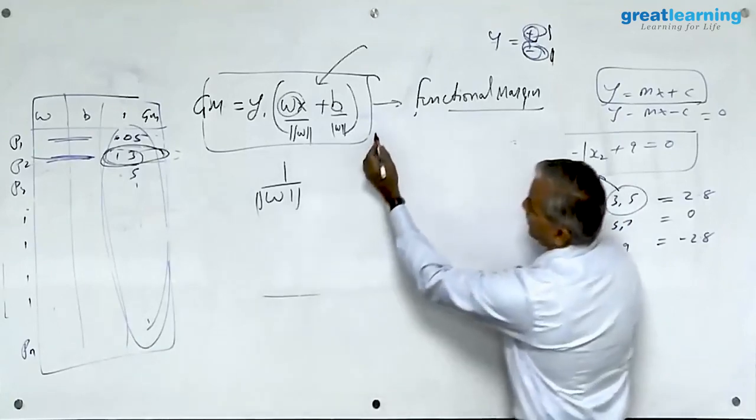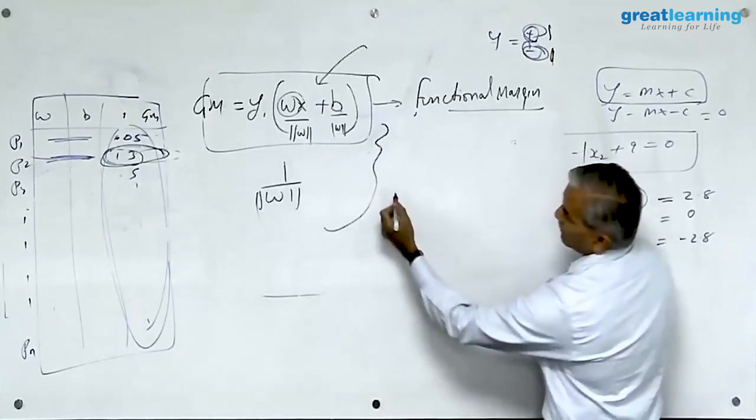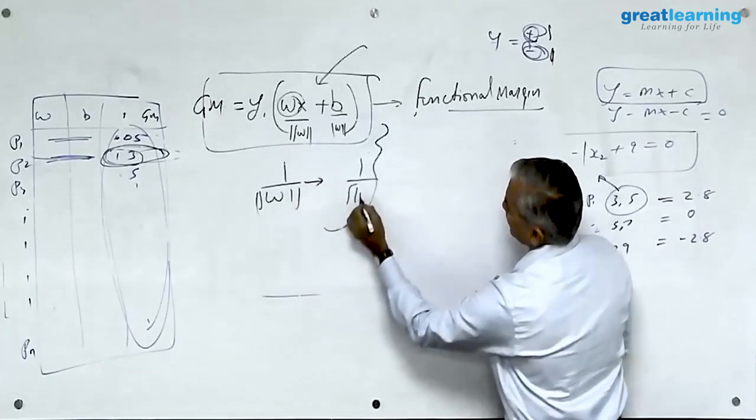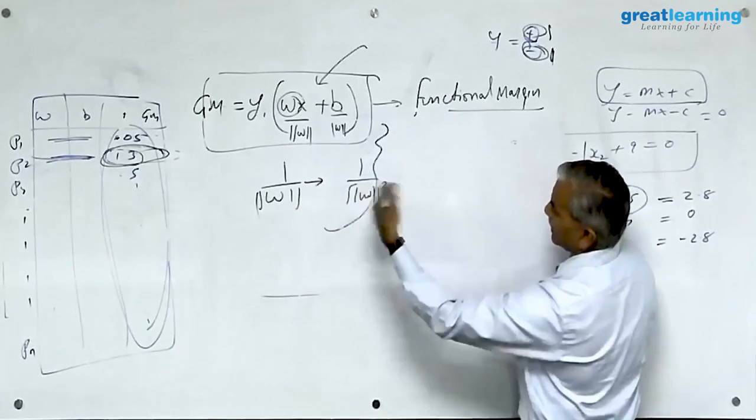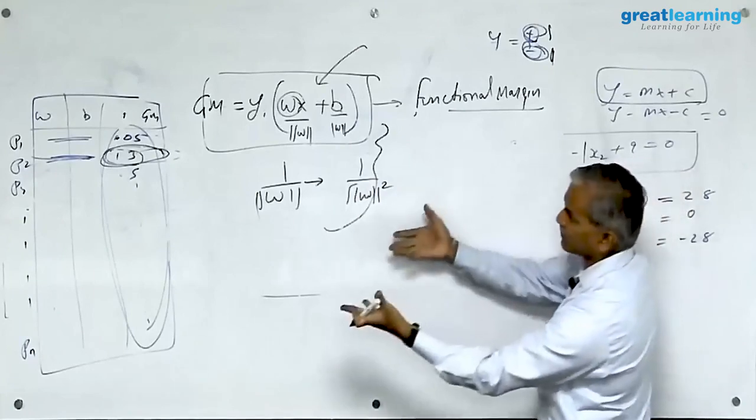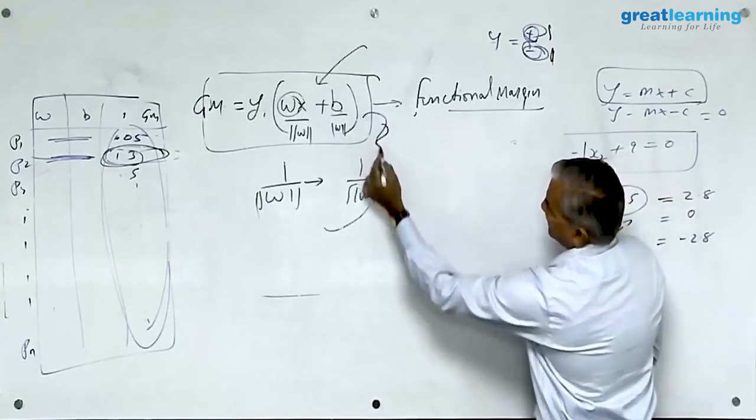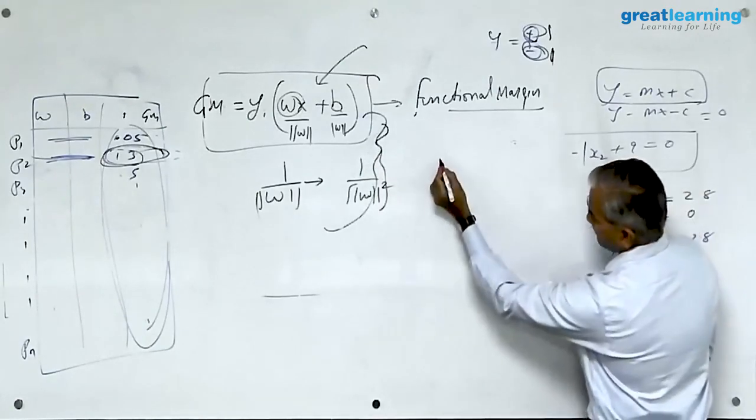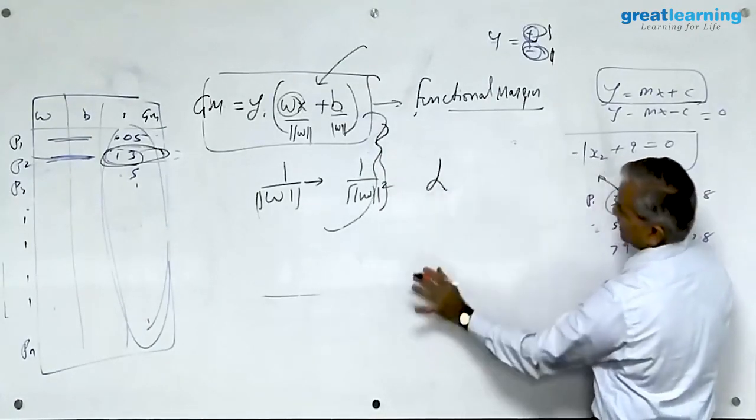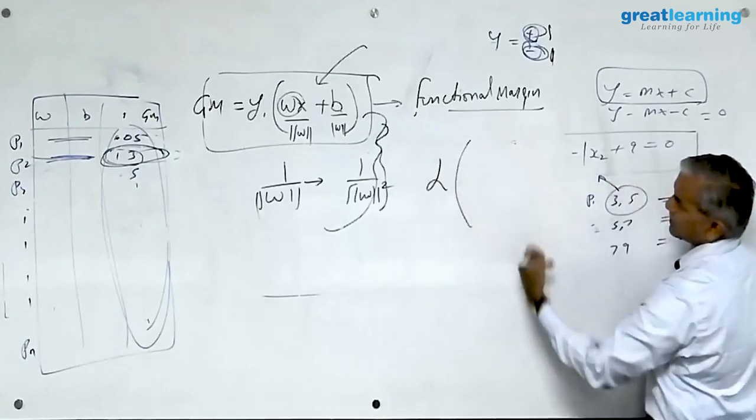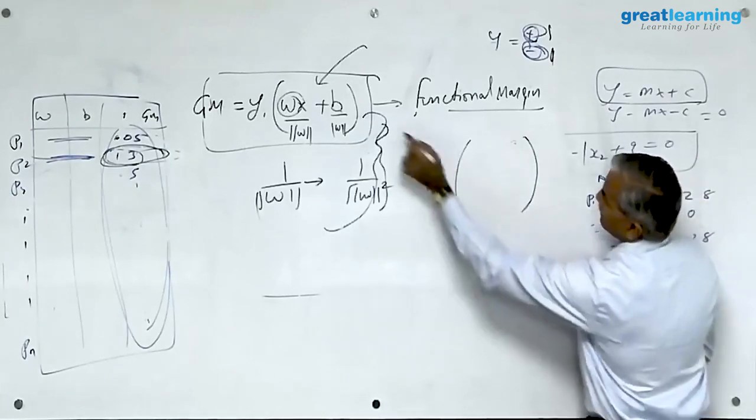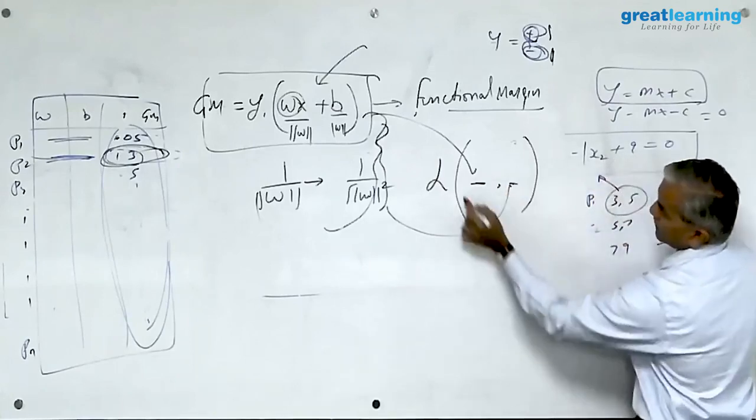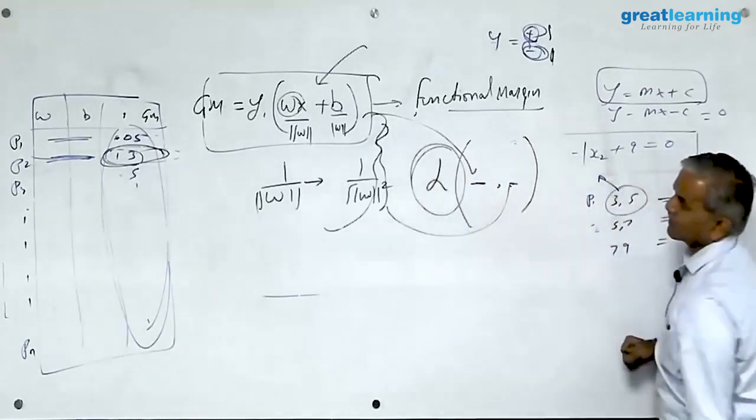This combination when you come across where you are minimizing something, what they do is they turn this into w squared to make it quadratic because quadratic has a particular property where it becomes easy to solve. To solve this combination they use a mathematical function called Lagrange's. Do not worry too much about these things. In the Lagrange's we put both these expressions, the overall objective is to minimize this.